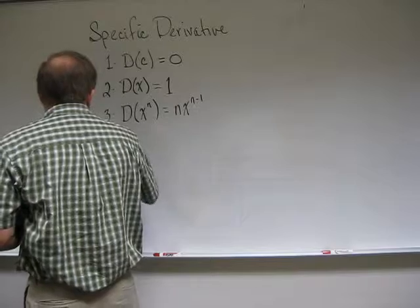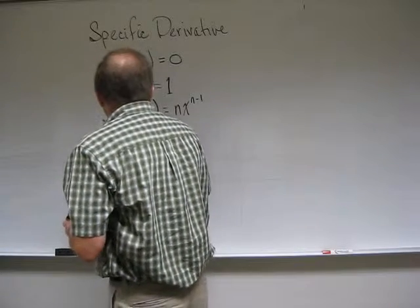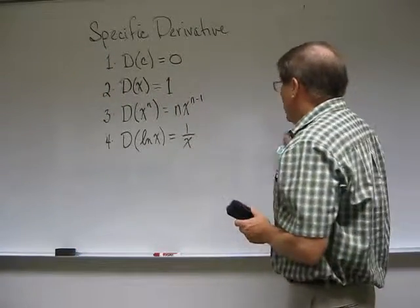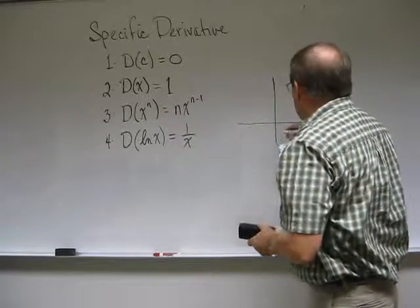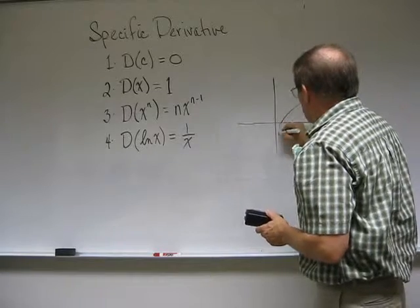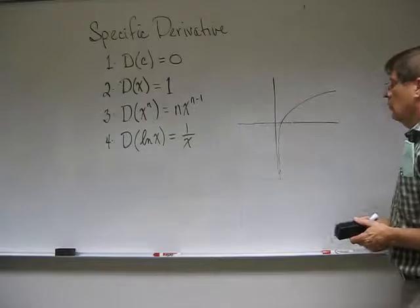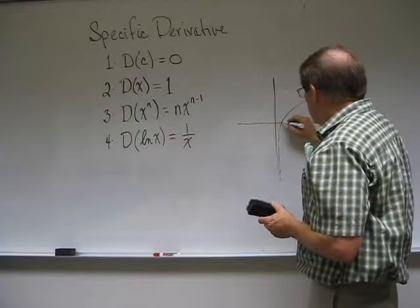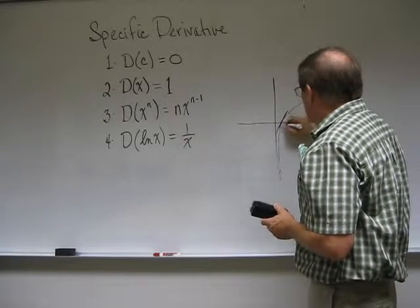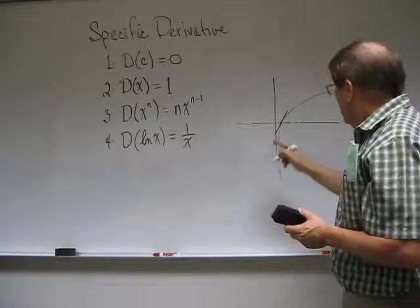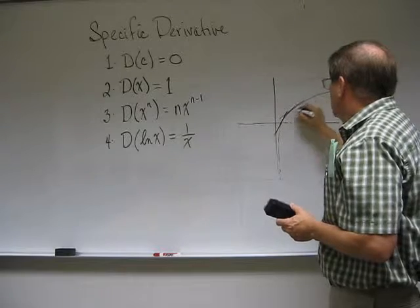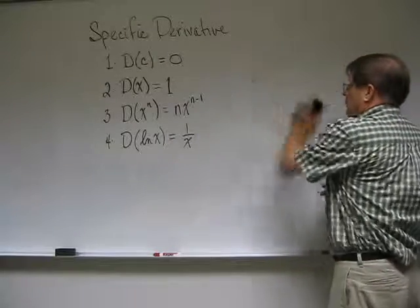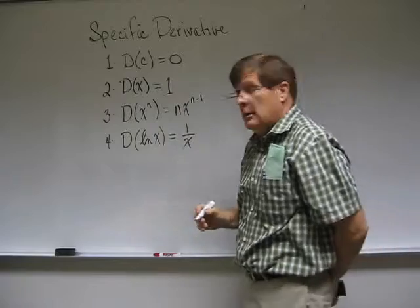Okay. Three more rules. The next rule is the derivative of the natural log of x is equal to 1 over x. You might remember that the graph of the natural log of x looks like this. It has a vertical asymptote getting close to the y axis and then it goes up like this. What this is telling us is that the slope of this curve when x is 1 is going to be 1. When x is 2, that slope is going to be 1 half. Rise is 1 for each 2 that it goes over, and so on. Okay. We'll give more reasons for why that's the slope later on, but it does the job.